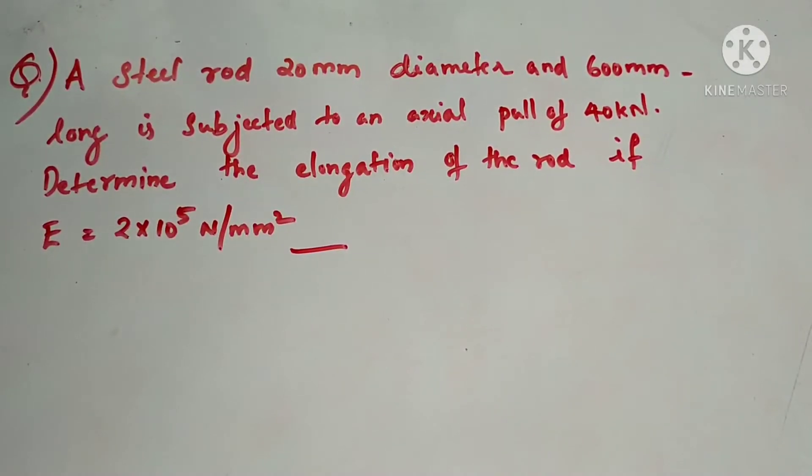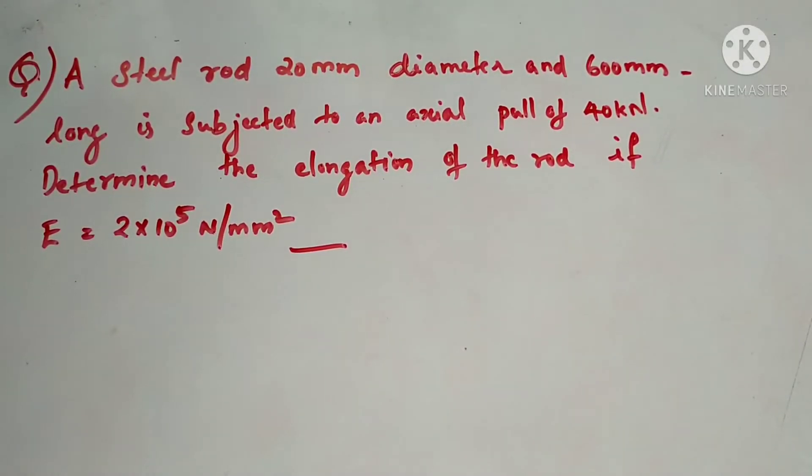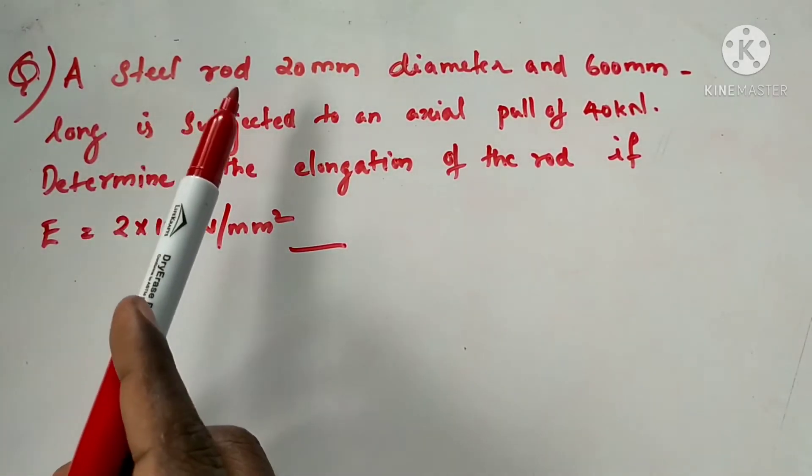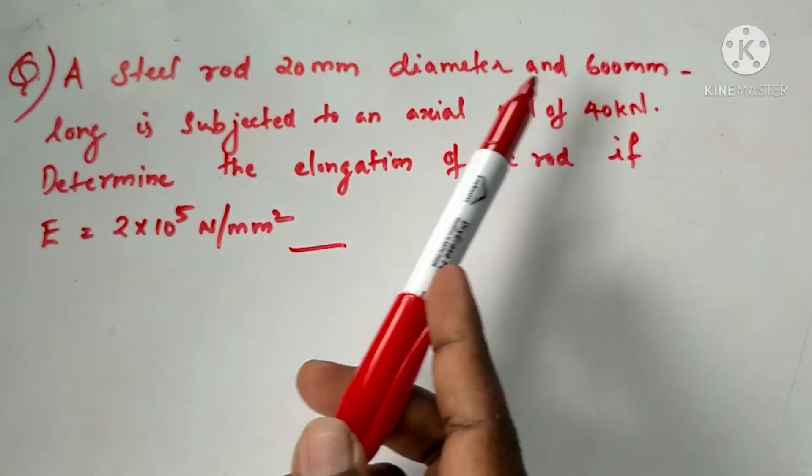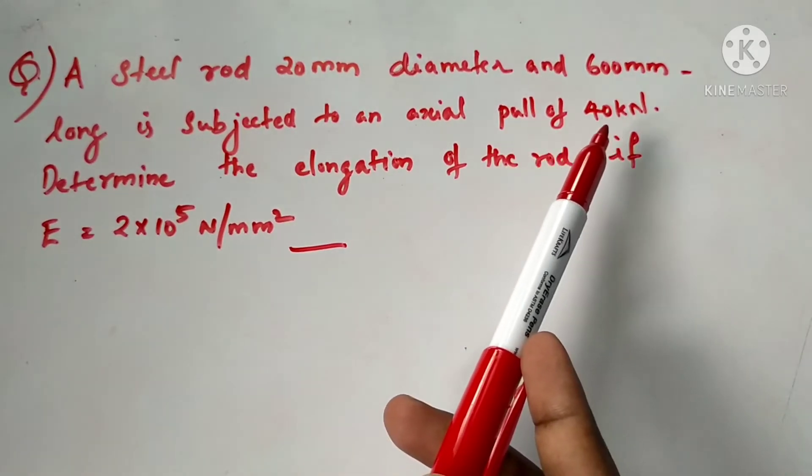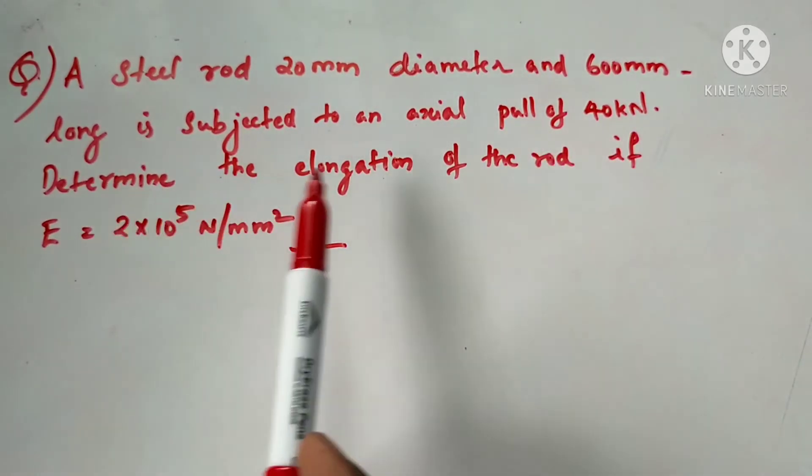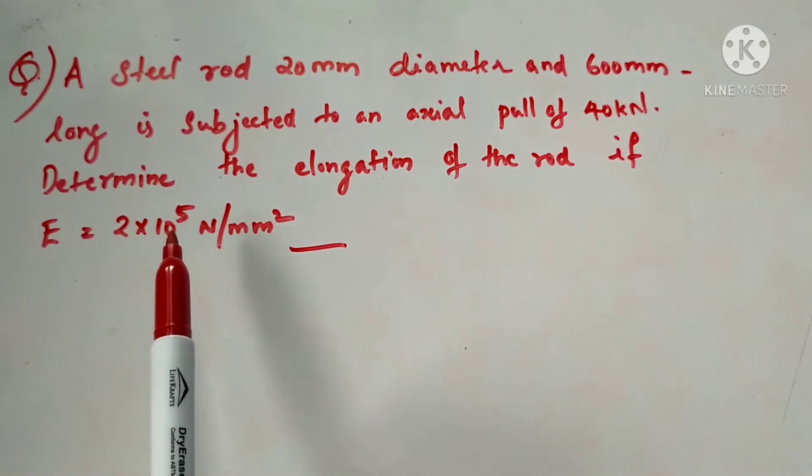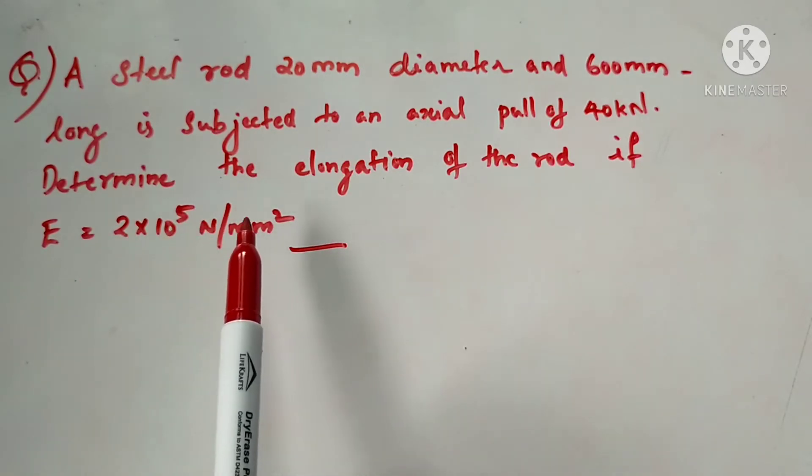We are going to discuss some problems with Hooke's Law. The question is: A steel rod 20 mm diameter and 600 mm long is subjected to an axial pull of 40 kN. Determine the elongation of the rod if Young's modulus E is equal to 2 × 10⁵ N/mm².